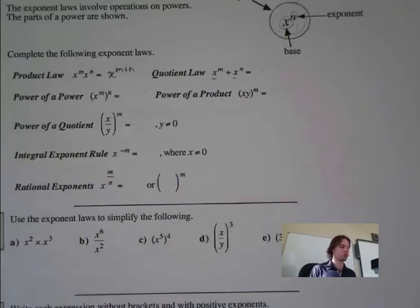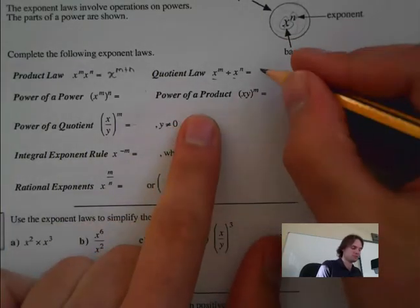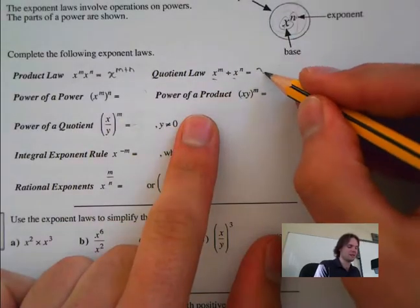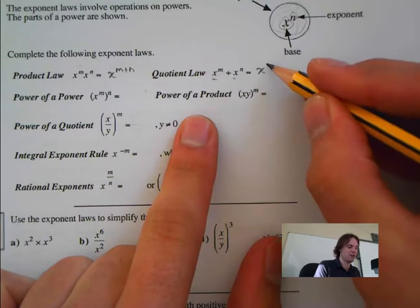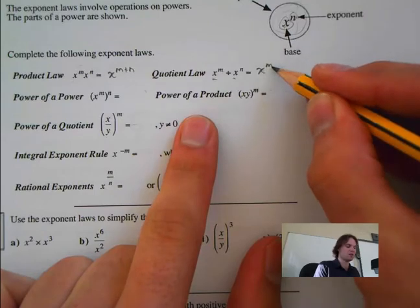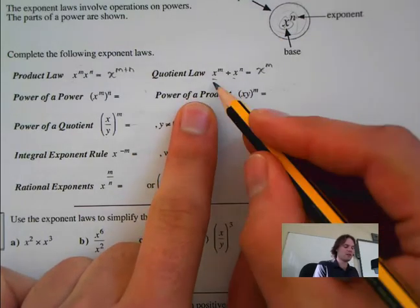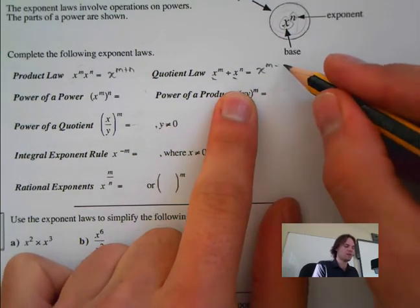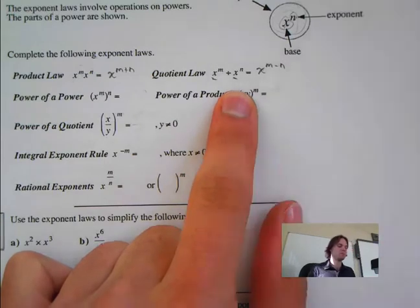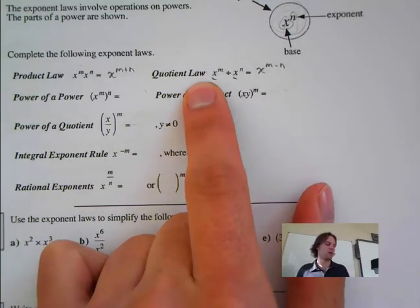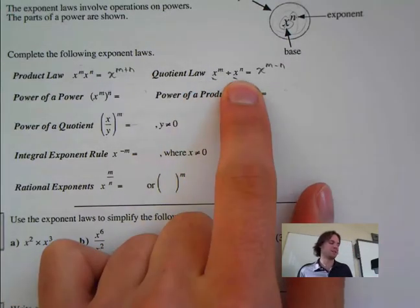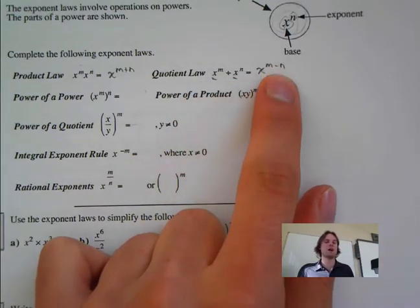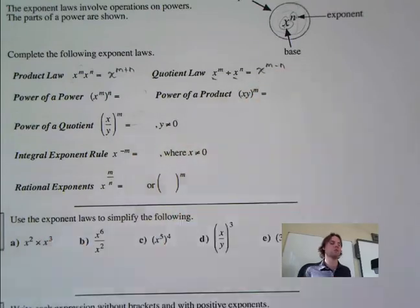Next one is the quotient law. When we're dividing, we have x to the m over x to the n — notice they're the same base. We subtract the exponents. If powers have the same base and we're dividing them, we subtract the exponents.